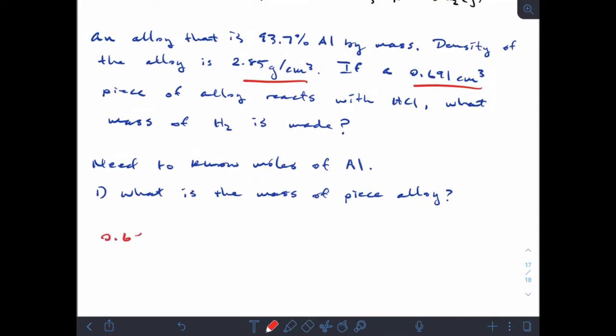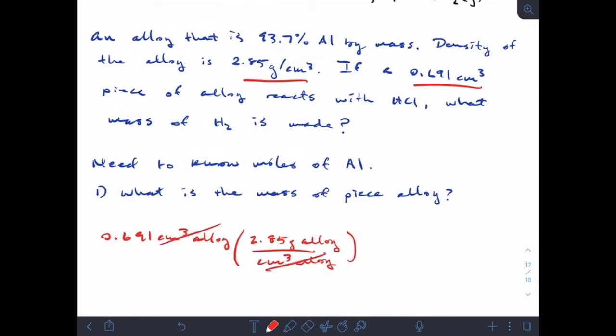We have density of the alloy and volume of the alloy. Density is a conversion factor and I have volume, so that will give me mass of the alloy piece. I'm going to start with 0.691 cubic centimeters of alloy and use the density like a conversion factor: 2.85 grams of alloy per cubic centimeter of alloy. My cubic centimeters of alloy cancel, leaving me with 1.969 grams of alloy, tracking at the third sig fig.